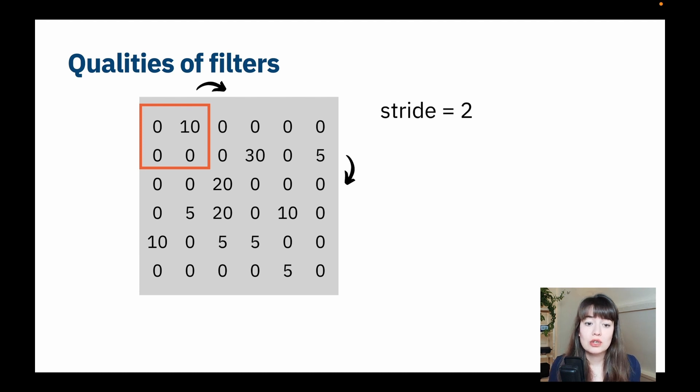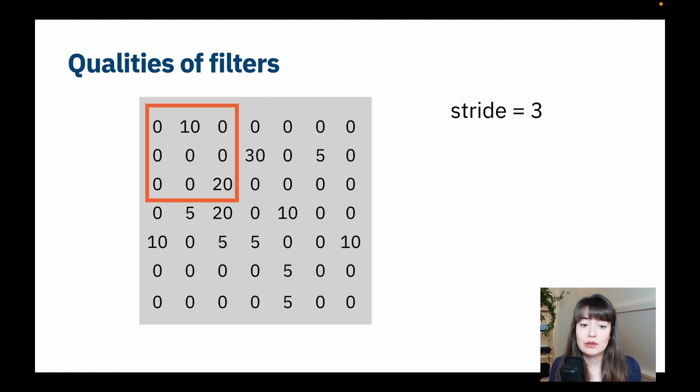So what's going to happen is if our filter is here, if our stride is 2, then we're going to jump to the next 2, because we're jumping 2 places in our image or photo. And that will apply both to going sideways and also going down.